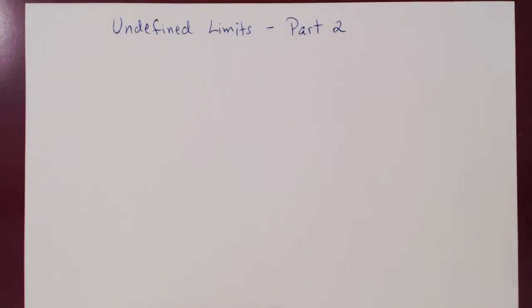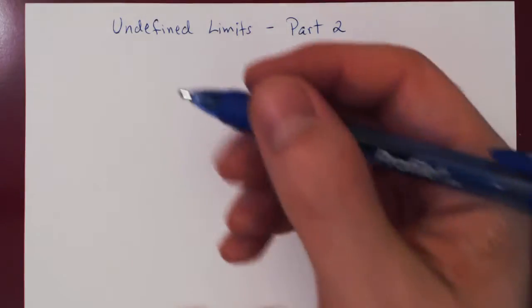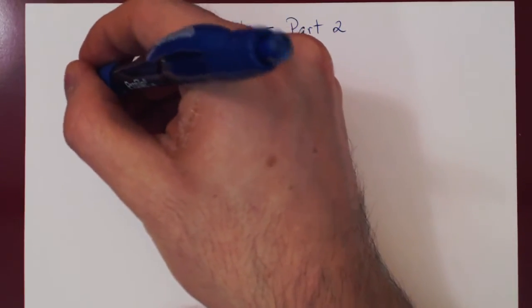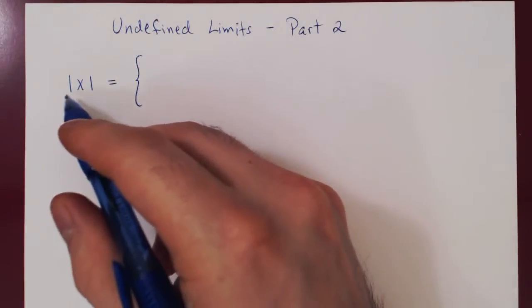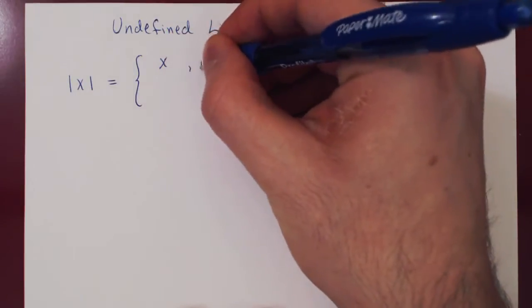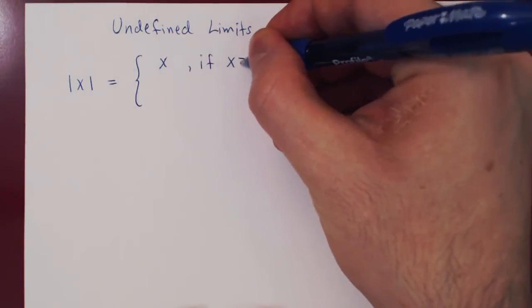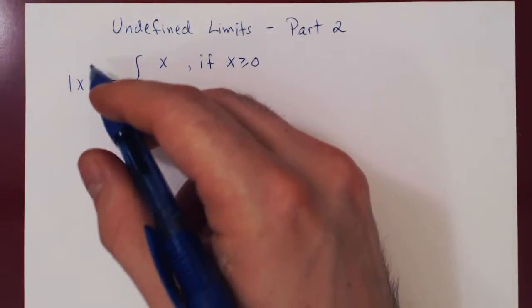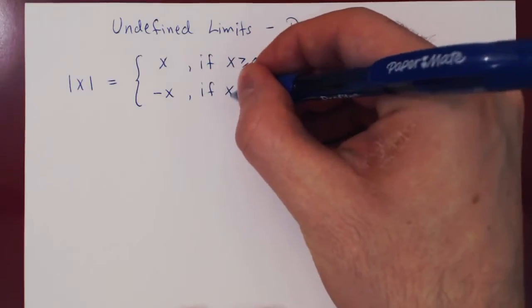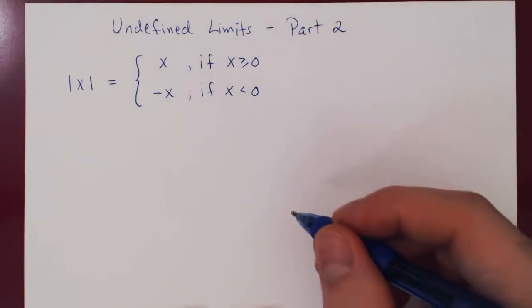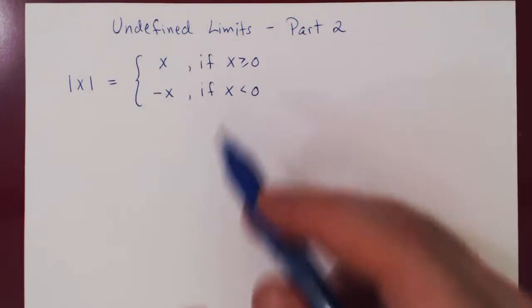In this video we will consider a single example of an undefined limit involving an absolute value. Let's first recall quickly what the absolute value function is. Algebraically, the absolute value of x returns x if x is non-negative (greater than or equal to 0), and returns negative x if x is negative.